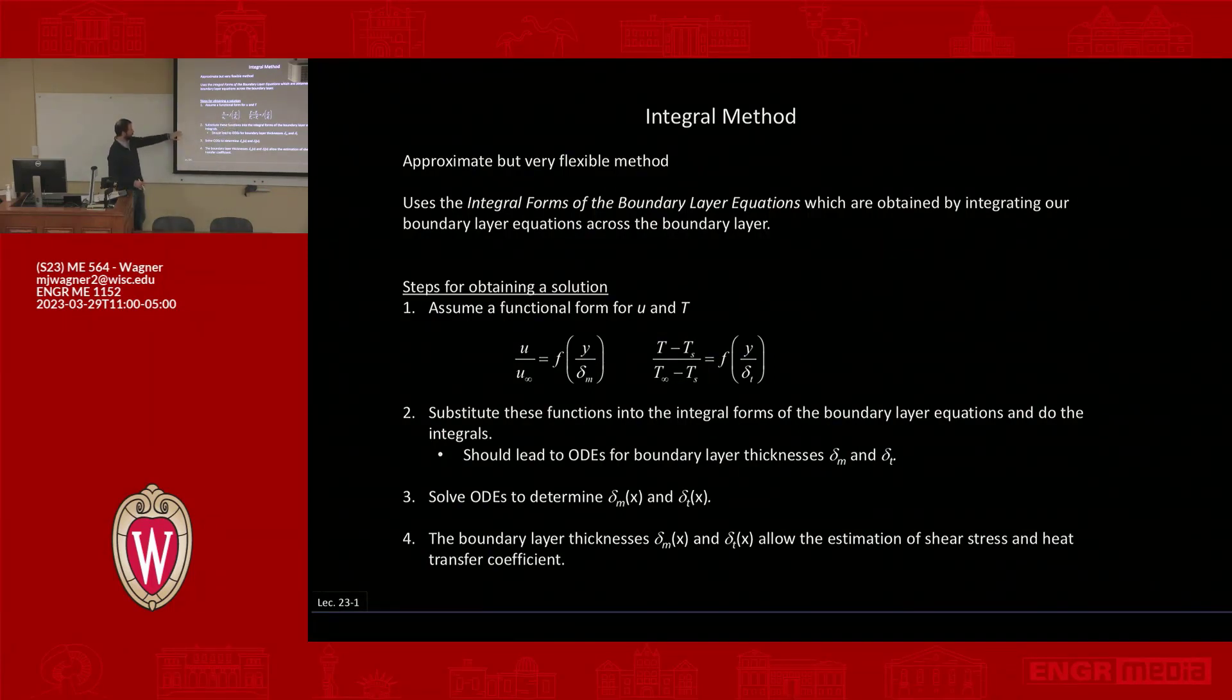So once we have substituted this stuff in, it'll lead to ODEs for boundary layer thickness, delta m and delta t. If we can compute then the boundary layer thickness at a given position, then we can use that information to solve for things like estimated shear stress, estimated heat transfer coefficient. So we're again going back to this approximate model where we say, give me the boundary layer thickness, I'll tell you something about the things we actually care about.